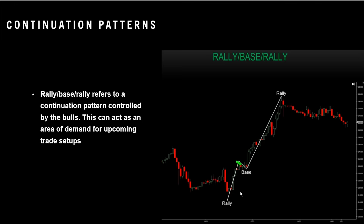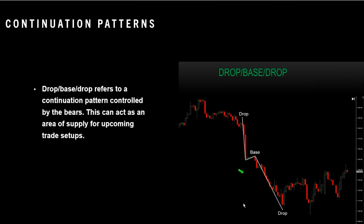Rally-base-rally refers to a continuation pattern controlled by the bulls. This can act as an area of supply for upcoming trade setups — if the price comes back to this base, it would be a good idea to get long here. Drop-base-drop refers to a continuation pattern controlled by the bears. This can act as an area of supply for upcoming trade setups — if the price comes back up to the base, it would be a good idea to get short here. This formation just looks good to go short after it breaks the consolidation slash base.